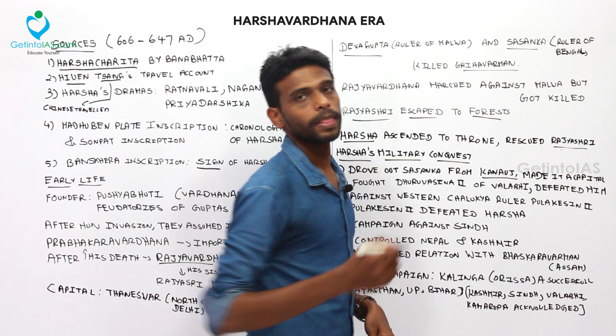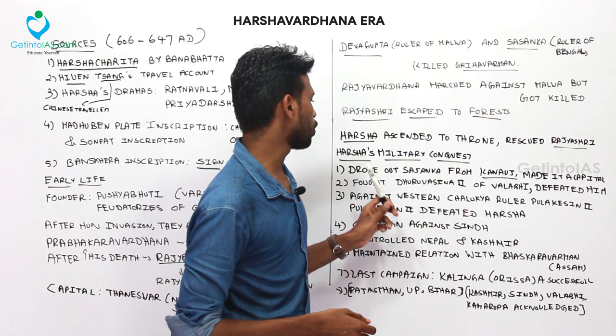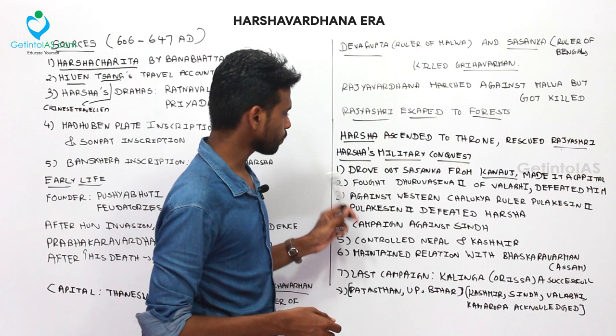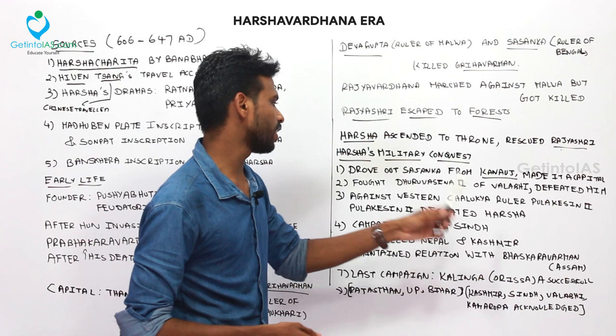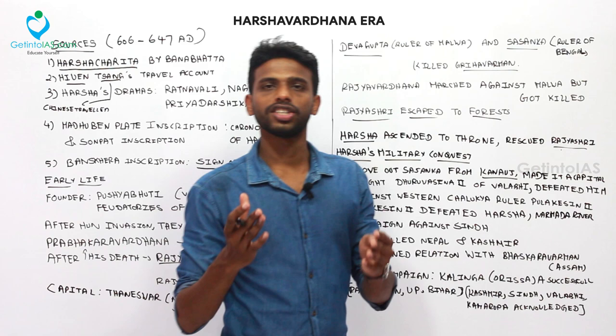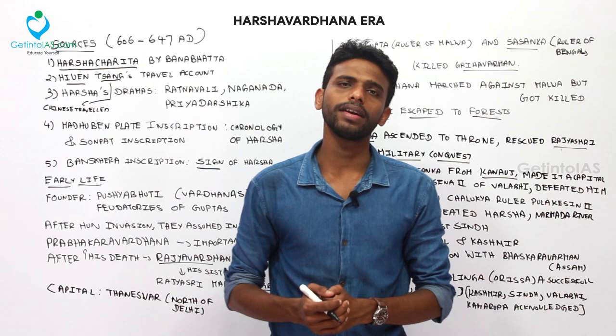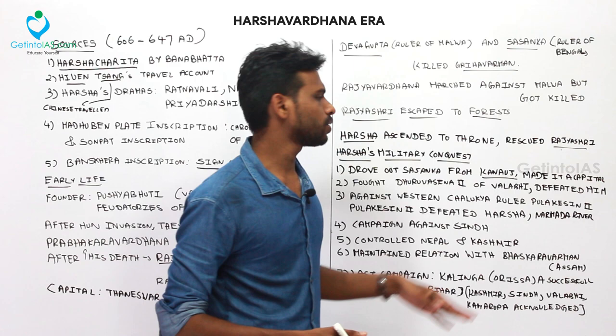In his second military conquest he fought Dhruvasena II of Vallabhi and defeated him. He also waged war against the western Chalukya ruler Pulakesi II in the Deccan region. However, Pulakesi II stopped him and defeated him while Harsha was trying to march south of the Narmada River. Harsha could not move further into the south.